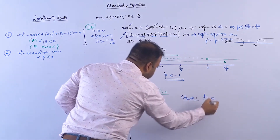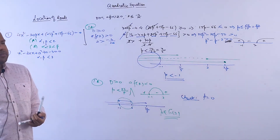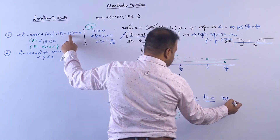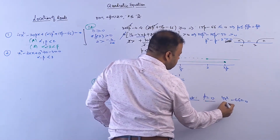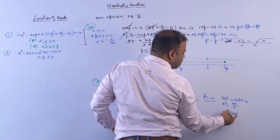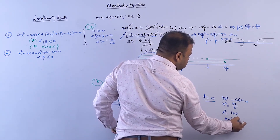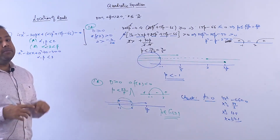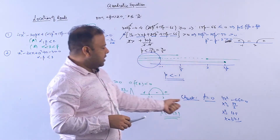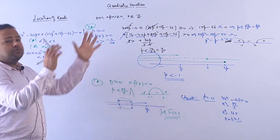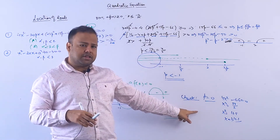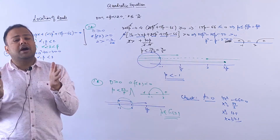Let's verify: take p = 0. The equation becomes 4x² − 66 = 0, so x² = 66/4 = 16.5, giving x = ±√16.5 ≈ ±4.06. Does 2 lie between −4.06 and 4.06? Yes, it does. So whatever value of p between −1 and 2 you take, 2 will always lie between the roots.